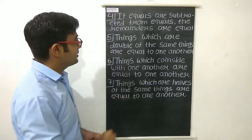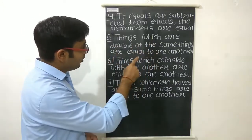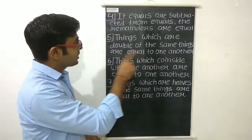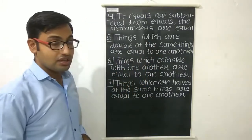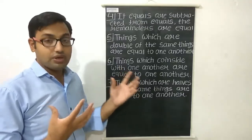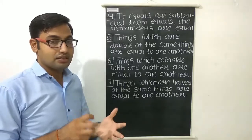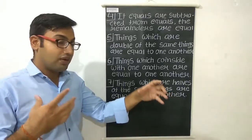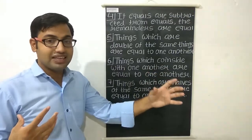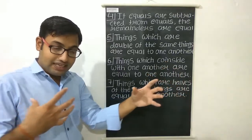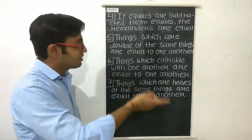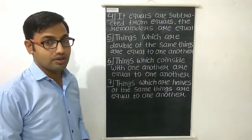The fifth axiom is: things which are double of the same things are equal to one another. For example, take 5 kg of sugar on both sides. If we double both sides, we get 10 kg on the first side and 10 kg on the second side. So both 10 kg values are equal.